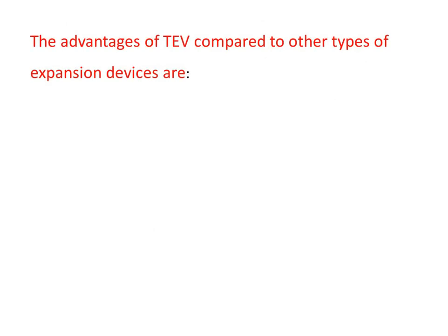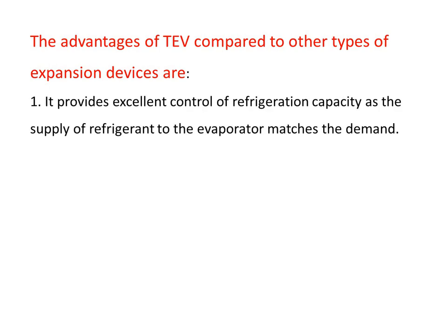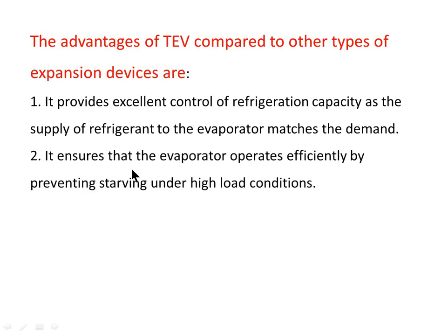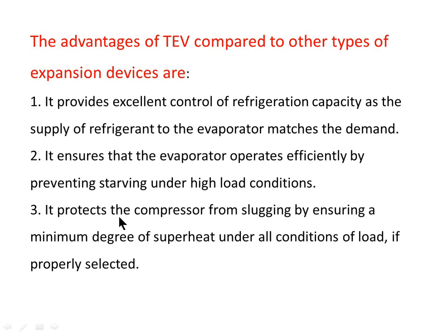The advantages of the thermostatic expansion valve compared to other expansion devices are: it provides excellent control of refrigeration capacity as the supply of refrigerant to the evaporator matches the demand; it ensures the evaporator operates efficiently by preventing starving under high load conditions; and it protects the compressor from slugging by ensuring a minimum degree of superheat under all conditions of load, if properly selected.